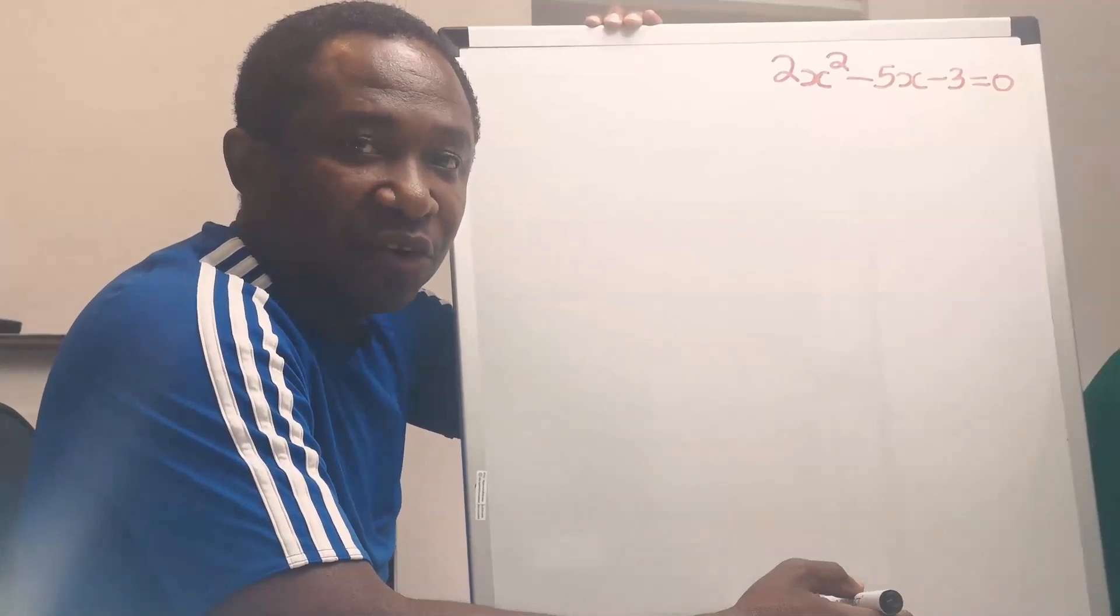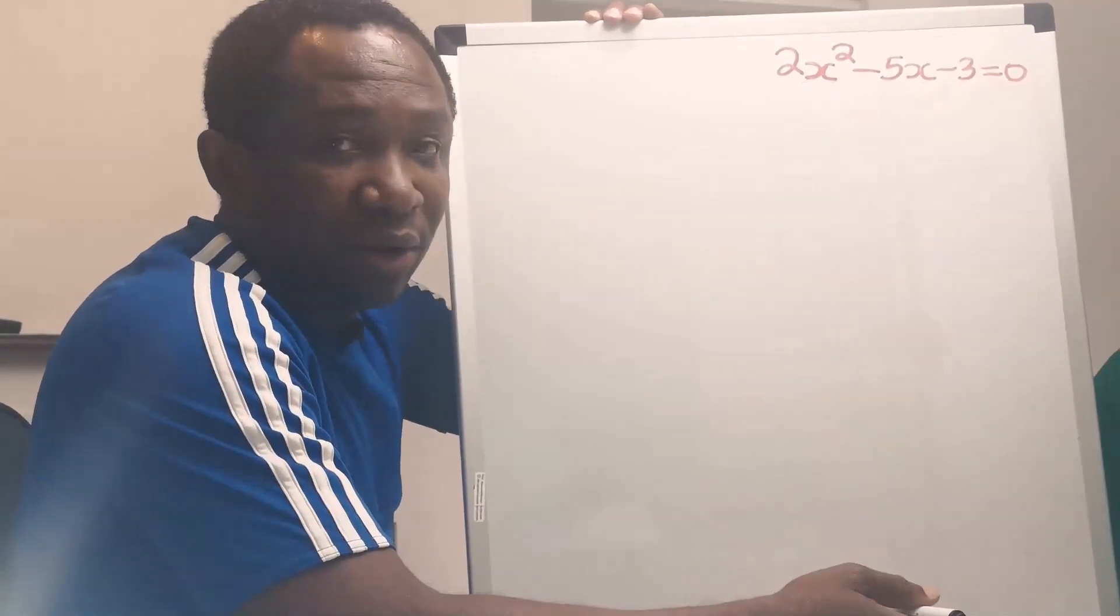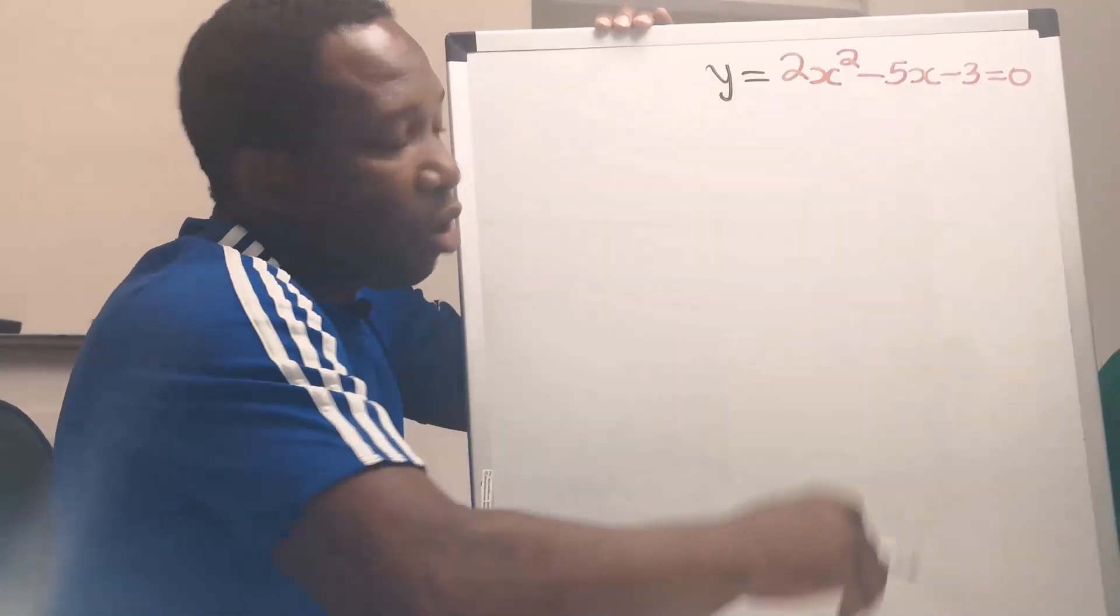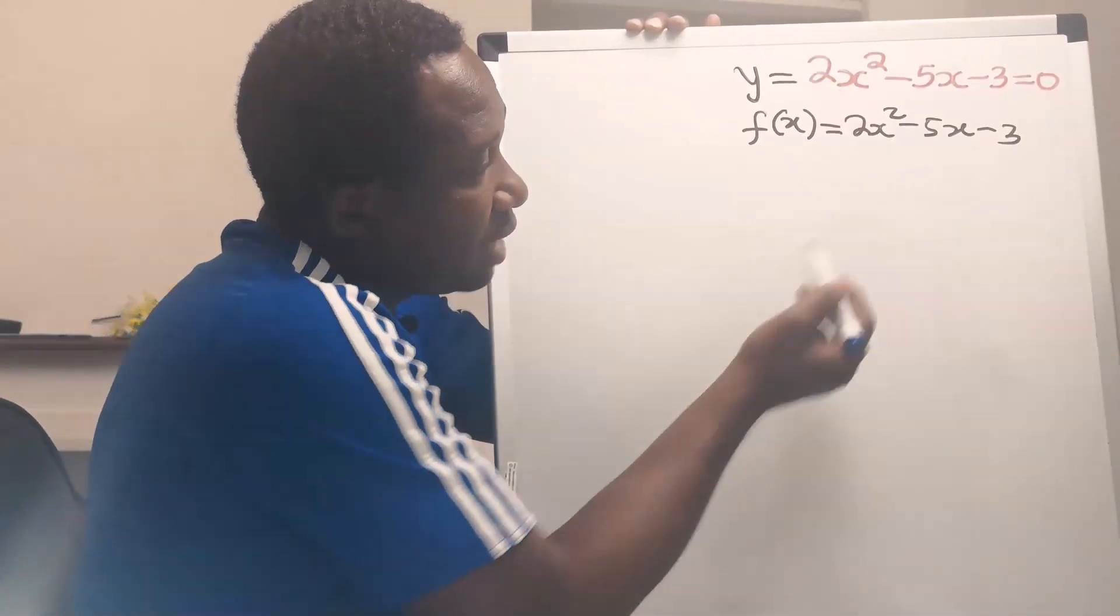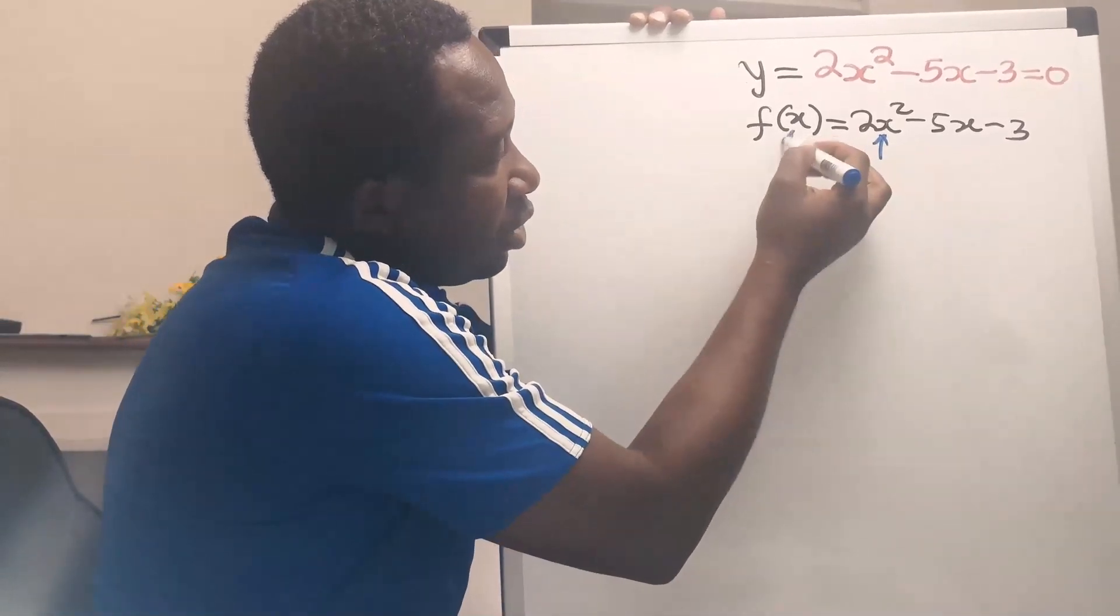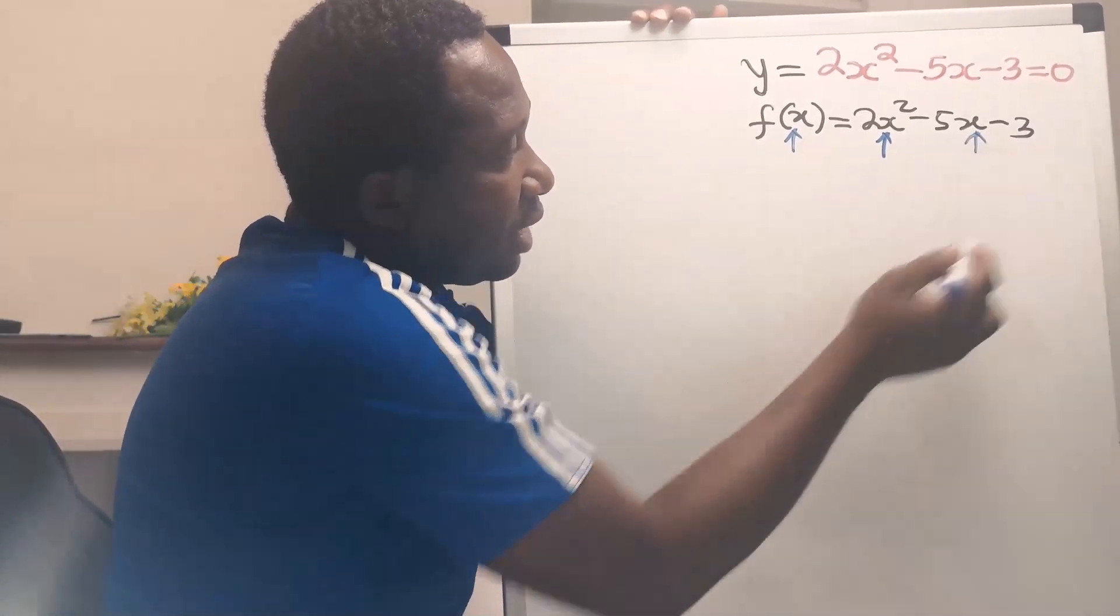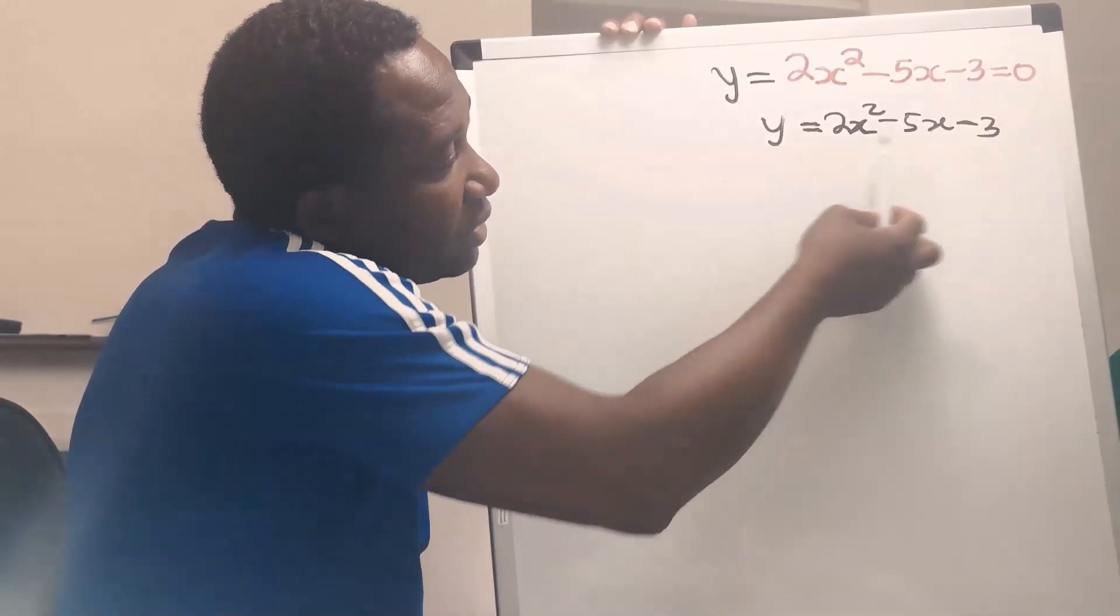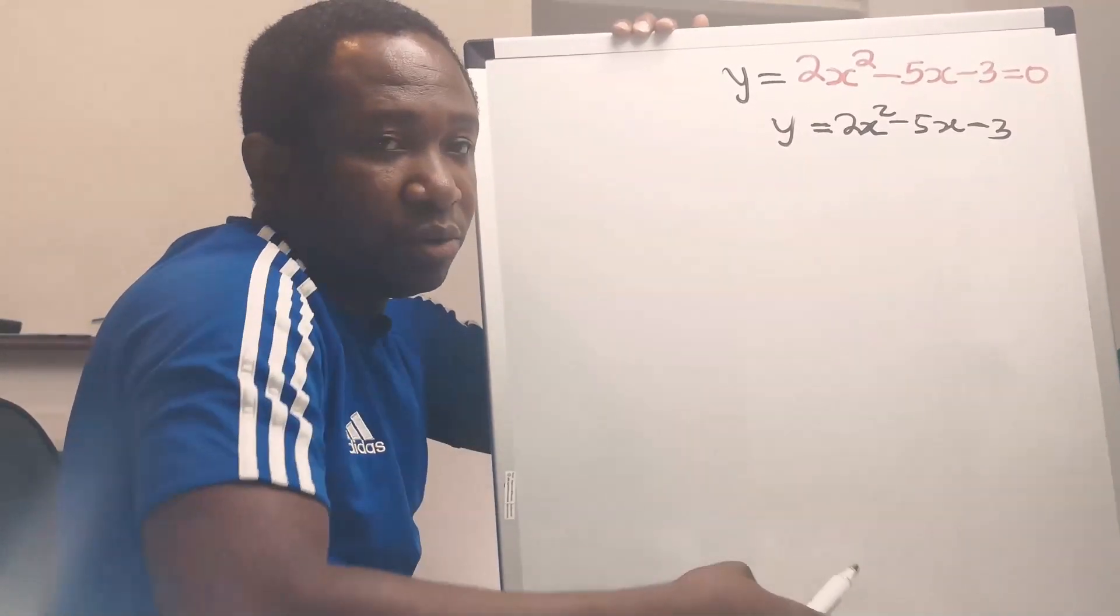To apply the graphical method to this quadratic equation, it must be a function of y. This means that the value of x will keep changing in this equation. To keep it simple, we just say that the quadratic equation equals y.